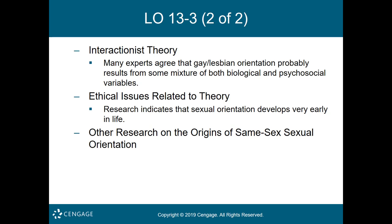Researchers identified some interesting findings of special significance. First, sexual orientation appears to emerge by the time males and females reach adolescence, even when people have little or no sexual experience. Second, lesbian and gay people have similar amounts of heterosexual experiences during childhood and adolescence compared to heterosexual people — the key difference is that although they participate in heterosexual activity, they do not enjoy it very much. The third major finding involves gender non-conformity, which appears to begin in childhood for gay males and lesbians.